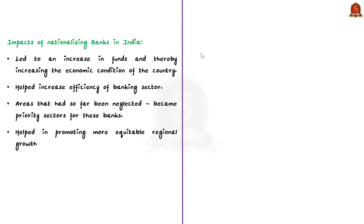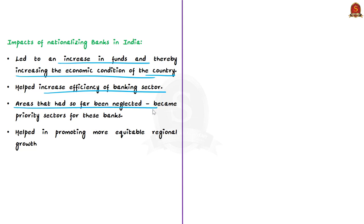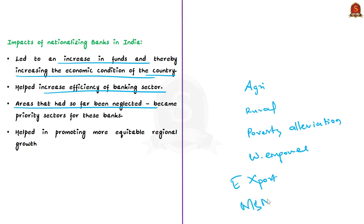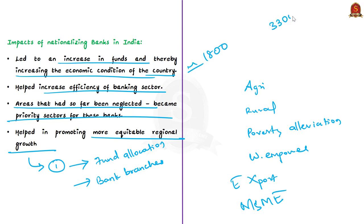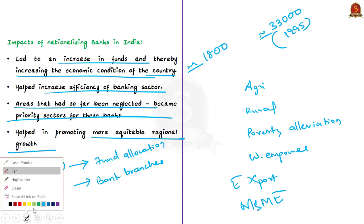The impacts of nationalizing banks in India include increased funds and improved economic conditions, increased efficiency of the banking sector, and flow of funds to previously neglected areas such as agriculture, rural development, poverty alleviation, exports, women empowerment, and the MSME sector. Many of these were made priority sectors with prescribed lending limits. The move also helped promote more equitable regional growth through more equitable fund allocation and more bank branches in rural areas — from only around 1,800 rural branches in 1969 to around 33,000 in 1995.